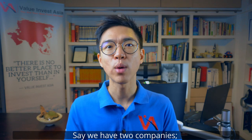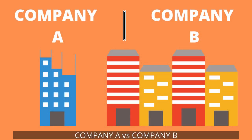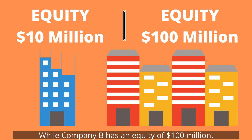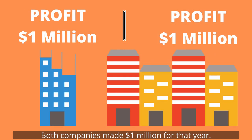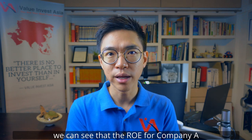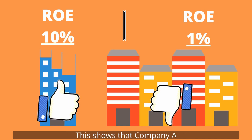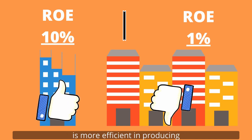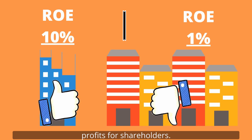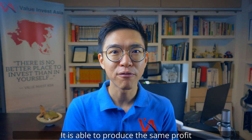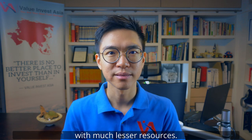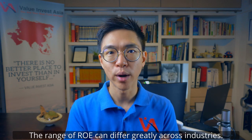Let's look at another example. Say we have two companies, Company A and Company B. Company A has equity of $10 million, while Company B has equity of $100 million. Both companies make $1 million for that year. Although they are equally profitable, the ROE for Company A is so much better than Company B. This shows that Company A is more efficient in producing profit for shareholders — it is able to produce the same profit with much lesser resources.